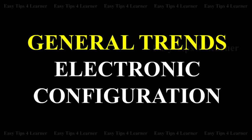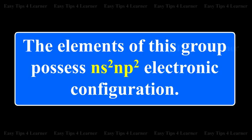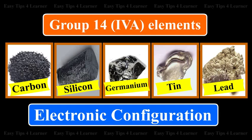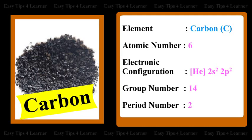General Trends — Electronic Configuration. The elements of this group possess NS2-NP2 electronic configuration. For the element Carbon, the atomic number is 6. The electronic configuration is He 2S2-2P2. The group number is 14 and the period number is 2.